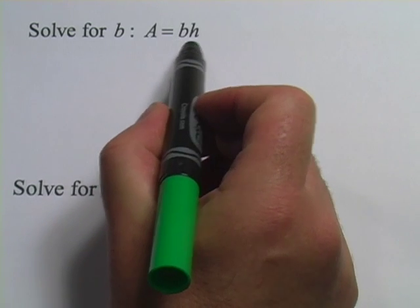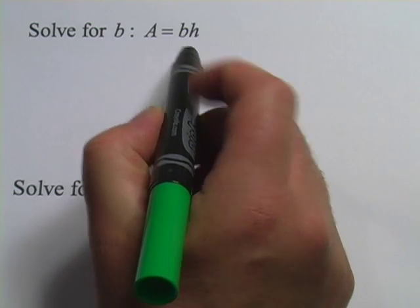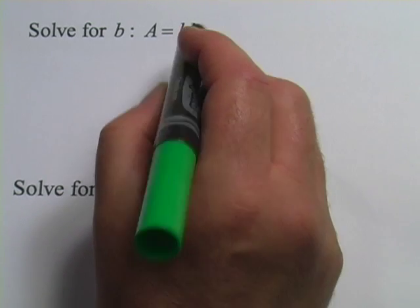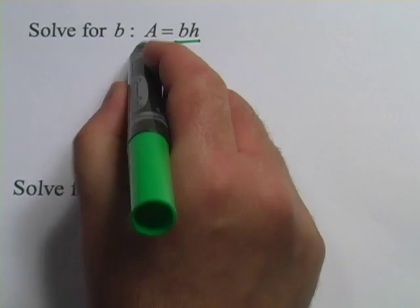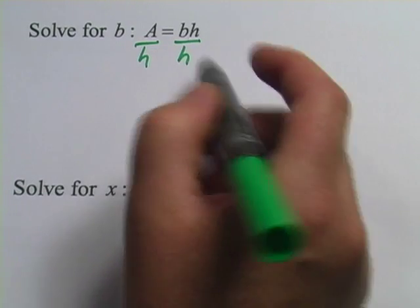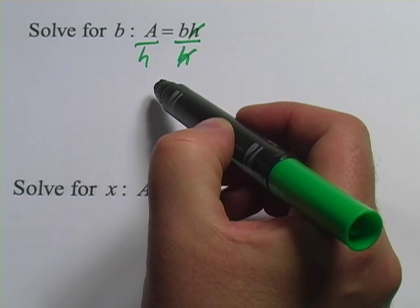In this case, the only thing being done to B here is that it's being multiplied by H, so we have to undo that by doing the opposite of multiplication, which is division. So we will divide by H, but we have to do it to both sides of the equation. On this side, the H's cancel, and we get B equals A over H.